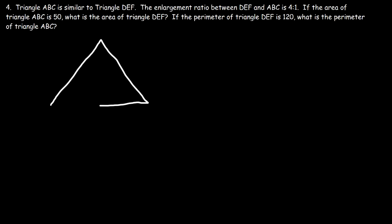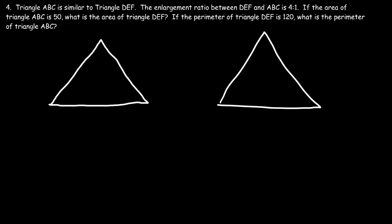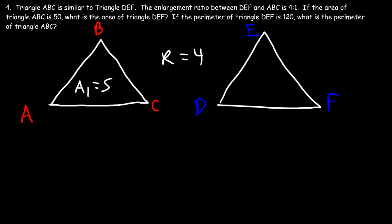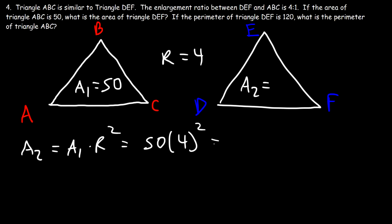Now let's finish problem 4. Triangle ABC has area A1 equals 50, and the enlargement ratio R equals 4. Using A2 equals A1 times R squared: 50 times 4 squared equals 50 times 16 equals 800 square units. So the area of triangle DEF is 800 square units.